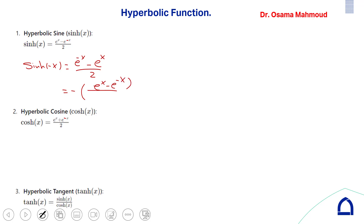Taking minus as a common factor gives −sinh(x). When f(−x) = −f(x), we call this an odd function. So sinh(x) is an odd function.